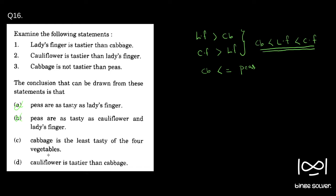Option C: cabbage is the least tasty of the four vegetables. We cannot say this for sure, since peas and cabbage can have the same taste. There is an equal-to sign here, so cabbage can be as tasty as peas — therefore this is also a wrong statement.